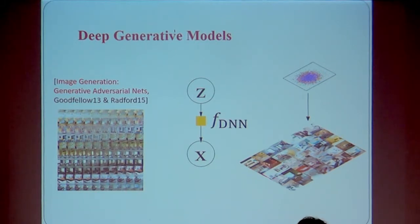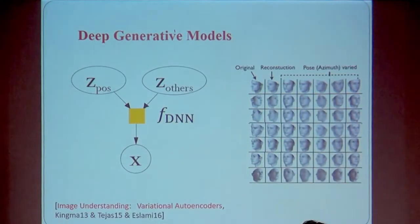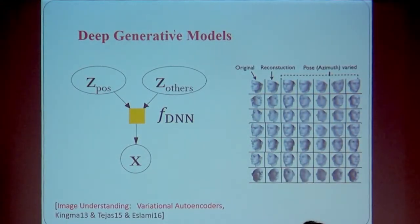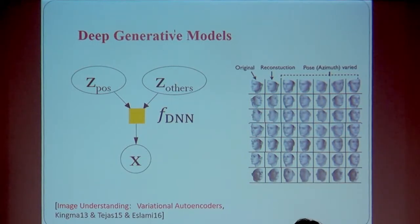These implicit deep models have many applications, for example generating natural images. We can learn a function to transform white noise into a nice-looking, natural image. You can also manipulate the latent factors to disentangle different factors from each other — for example, having some latent factors related to pose and others for different attributes. This can still be learned from data. In general, you can impose other structures into the generative model and do the learning and inference.